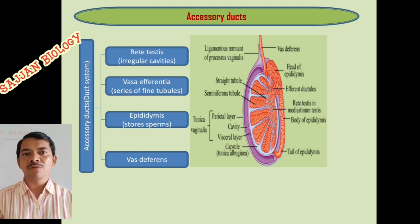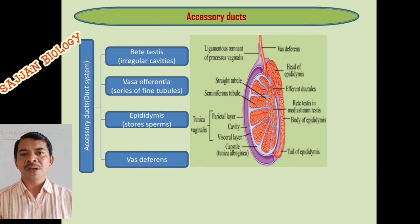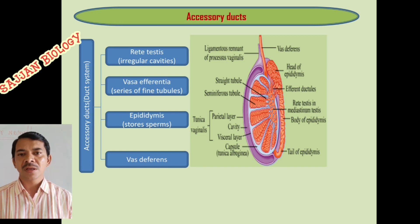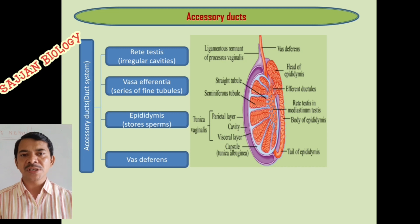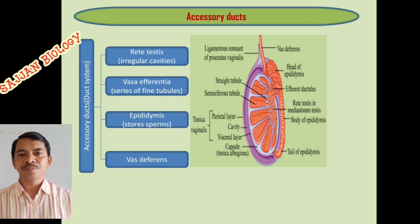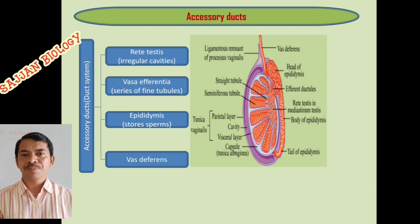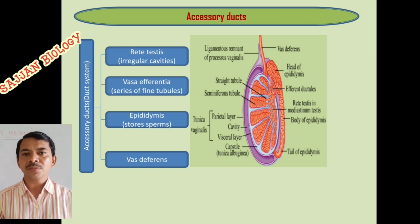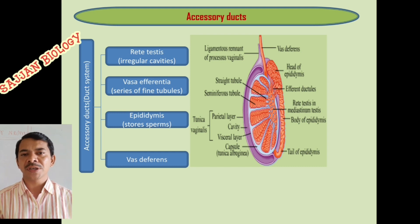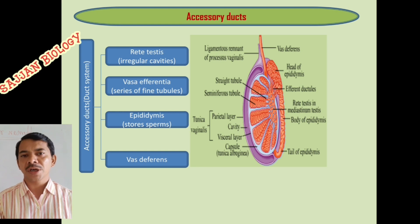The vas efferentia is connected to the epididymis. The epididymis is located on the posterior surface of the testis and is meant for temporary storage of sperms. Those sperms are later moved to the ejaculatory duct. Finally, the vas deferens is an elongated tubular structure which is connected to the urethra.